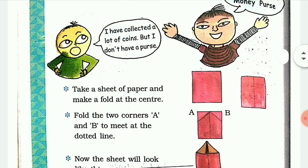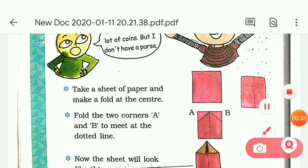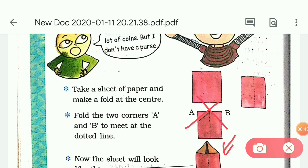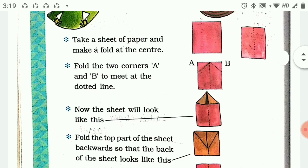Here they have given steps to make a money purse. Take a sheet of paper and make a fold at the center. Just take a sheet of paper and fold it in the center. Fold the corners A and B - fold these two corners to make it look like this.